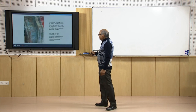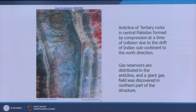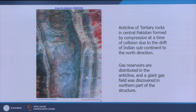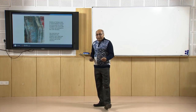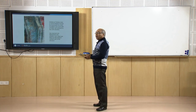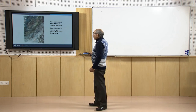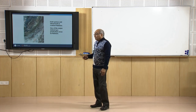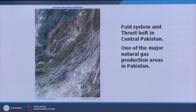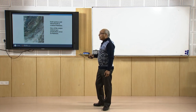Geological landforms can be identified very effectively in areas like Pakistan where sparse vegetation makes them clearly visible. Gas reservoirs are distributed in antiforms or anticlines, and a giant gas field was discovered in the northern part of such a structure. Initial investigations for oil, gas, or petroleum now always start with satellite data. These folds are good traps for natural gas and oil, and their interpretation gives clues about availability of such natural resources.